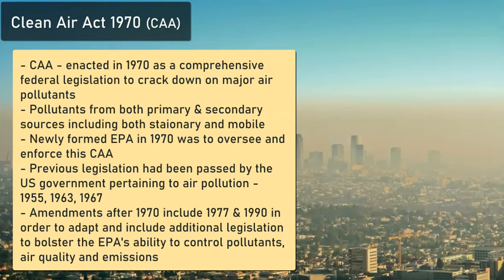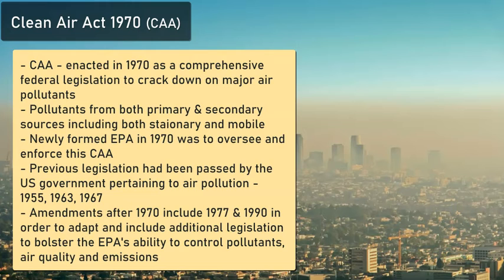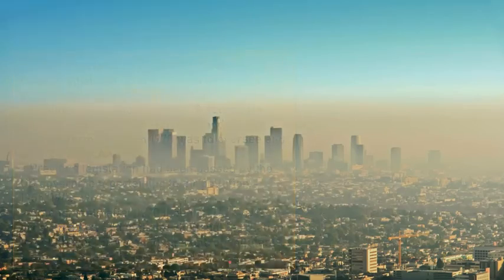So in conclusion, there has been a long line of air pollution control acts from the government starting in 1955 and culminating in 1970 with this big comprehensive federal legislation looking at the six main pollutants, analyzing and allowing the EPA to enforce these laws and address pollutants from different sources — both secondary and primary — across the country, and trying to minimize and reduce them.